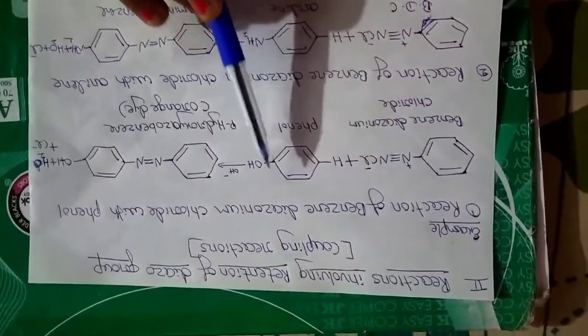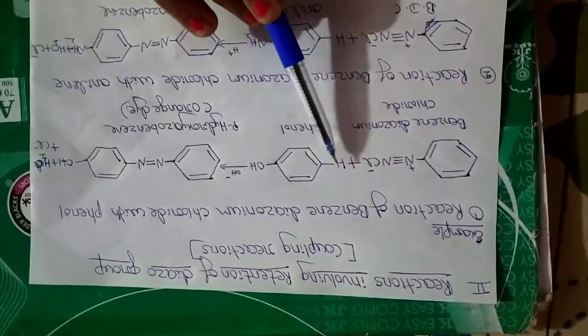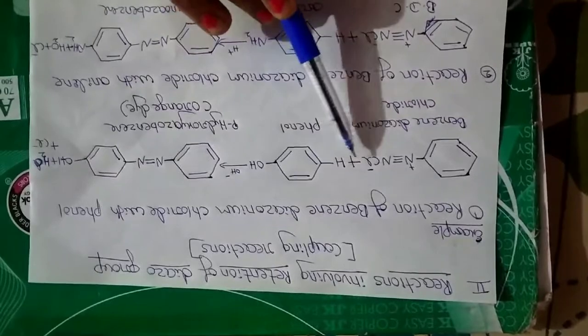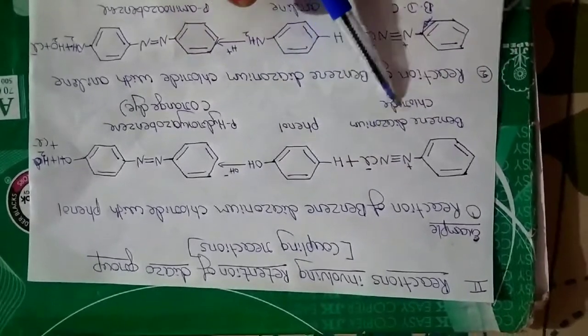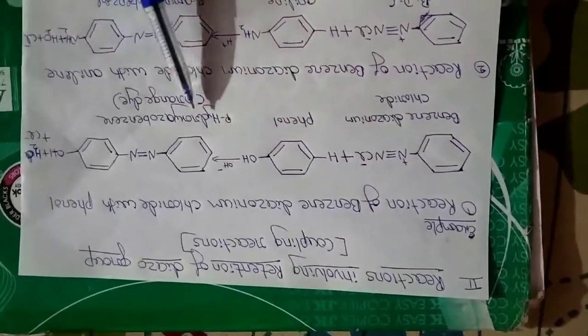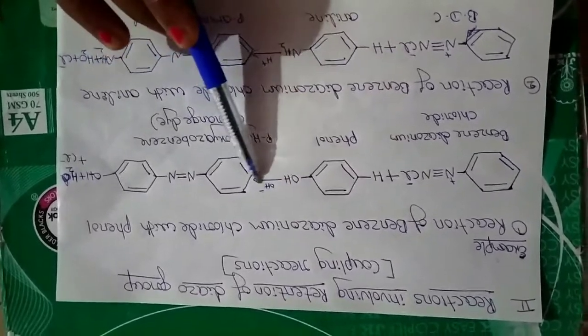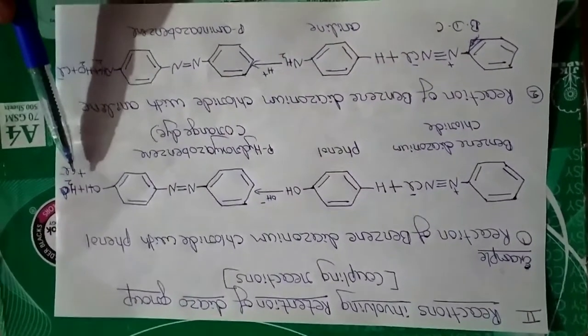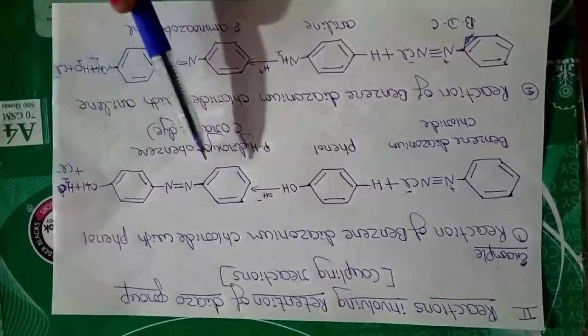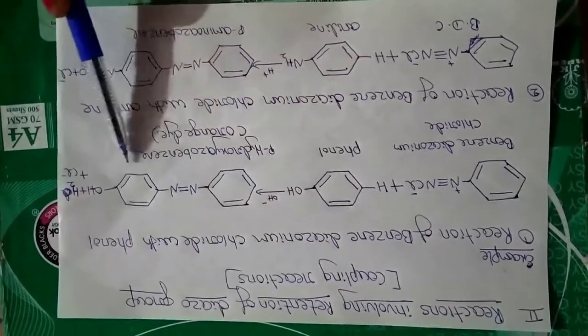See this hydrogen here - I have shown this hydrogen separately. When benzene diazonium chloride reacts with phenol, it forms para-hydroxy azobenzene which is orange in color. The reaction takes place in a basic medium with elimination of water molecule to form para-hydroxy azobenzene - it's an orange dye.